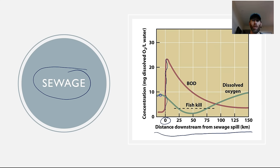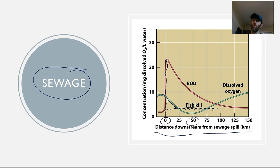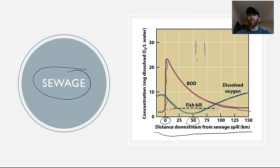As the demand for oxygen goes up, we see a corresponding decrease in the actual amount of dissolved oxygen. Dissolved oxygen needs to be above a certain level to support aquatic life — below that line we see fish kill. Around 50 kilometers downstream from the sewage spill, you see lots of fish deaths as a result. As we move further downstream, the water gets diluted, dissolved oxygen returns, and the demand for oxygen begins to decrease. This is a common type of graph that appears on multiple-choice questions about water pollution.